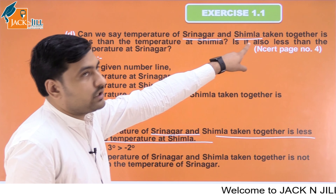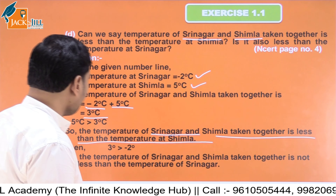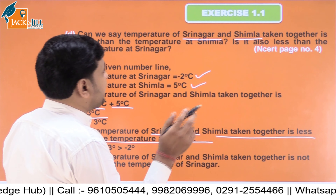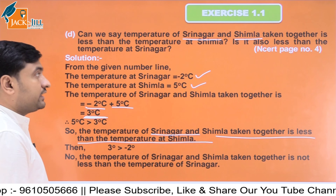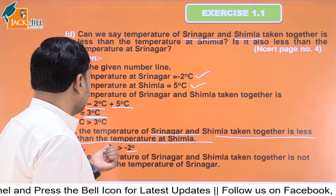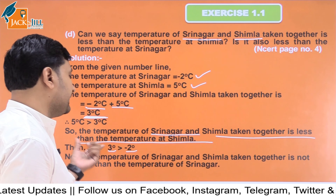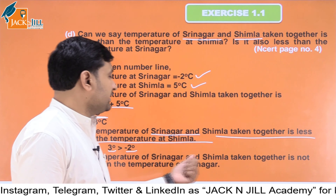So the temperature of Srinagar and Simla taken together is less than the temperature at Simla, that is, 3 degree Celsius is less than 5 degree Celsius. But is it also less than the temperature at Srinagar? No, because Srinagar is minus 2, and 3 degree Celsius is greater than minus 2. So the combined temperature is not less than Srinagar's temperature. This completes the first question.